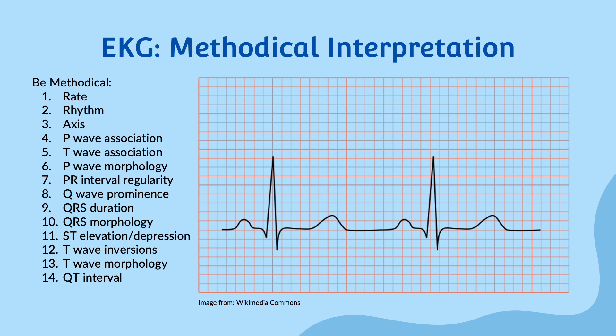We can also make sure that there are no T wave inversions, which may be indicative of other pathologies. Finally, we can check the QT interval to ensure that it is within normal limits, which typically ranges from 0.35 to 0.46 seconds. This is important as a long QT interval may predispose patients to deadly arrhythmias such as torsades de pointes.